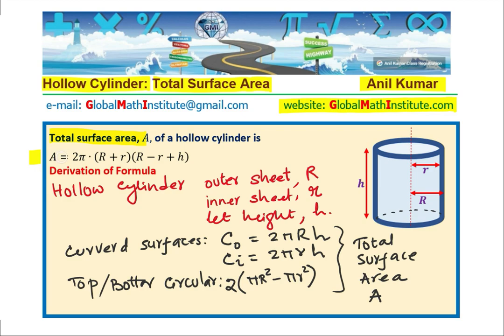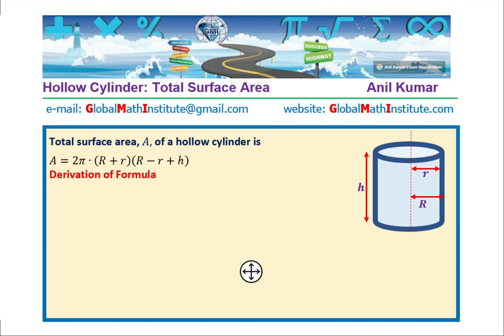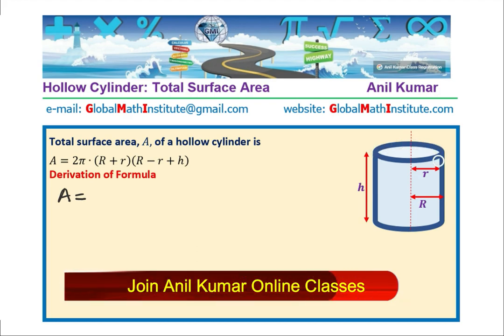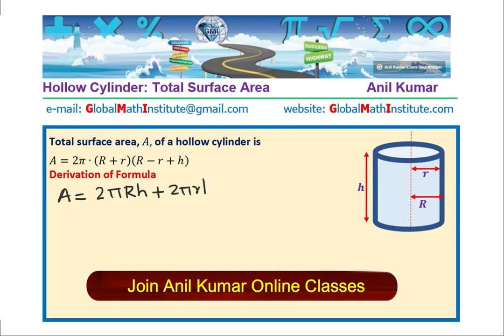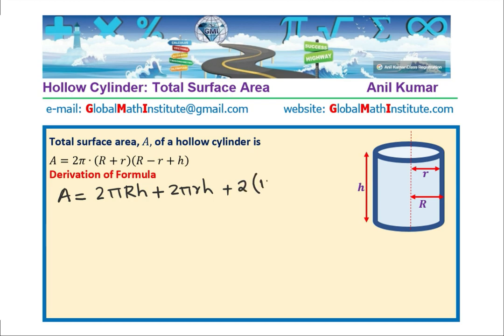So let us now develop the formula. We have total surface area A equal to the curved surface from outer, which is 2π capital Rh, plus the curved surface of inner, which is 2πrh, plus 2 times π capital R² minus π small r². Top and bottom.